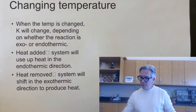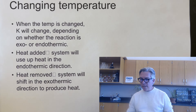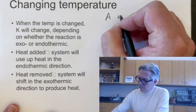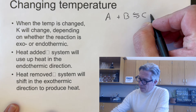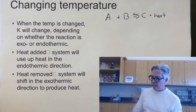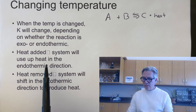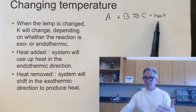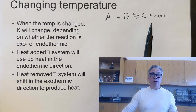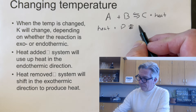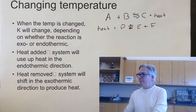When temperature is changed, K will change depending on whether the reaction is exothermic or endothermic. It's helpful to think of heat as either a reactant or product. For an exothermic reaction, heat is a product — A + B ⇌ C + heat. For an endothermic reaction, heat is a reactant — heat + D ⇌ E + F.